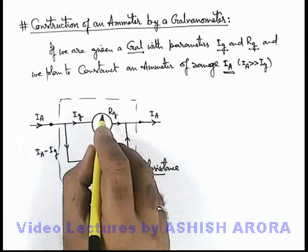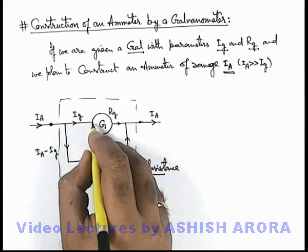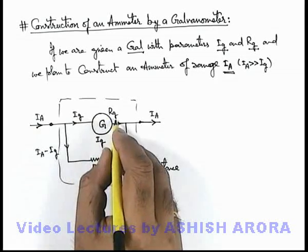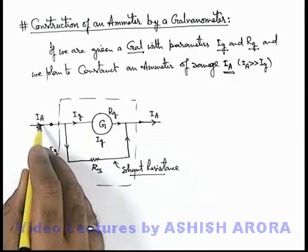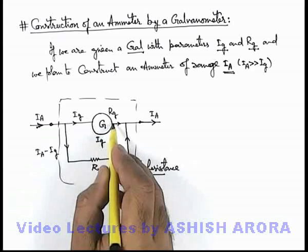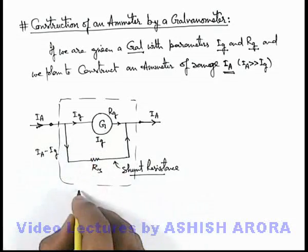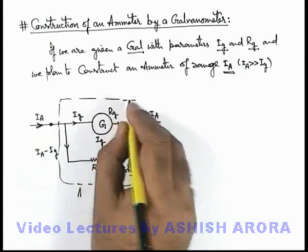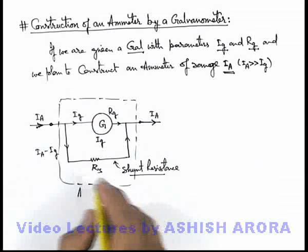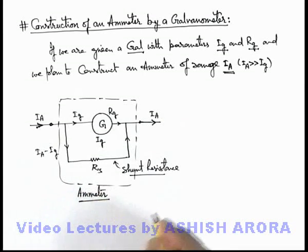The only thing visible from outside is the scale of this meter. If we change the scale from zero to i-a, from the outside world it will appear that when a current i-a is supplied, it is deflecting by full scale. So now it can be treated like an ammeter of range i-a. This system, or the box in which the whole circuitry is kept, can be termed as an ammeter of range i-a.